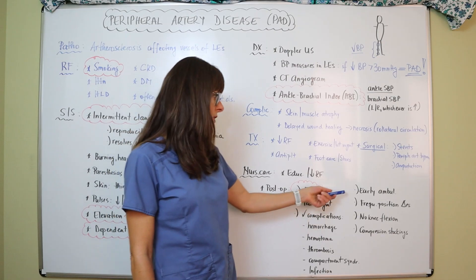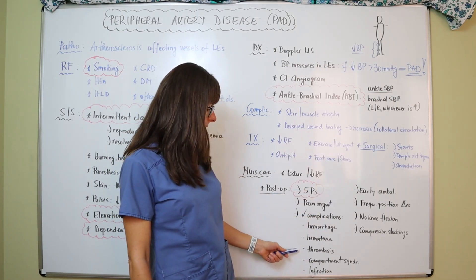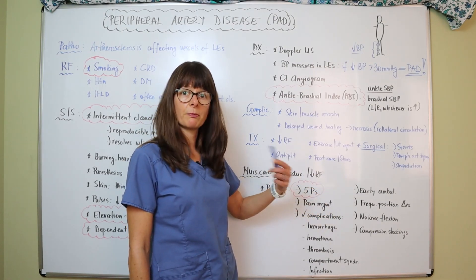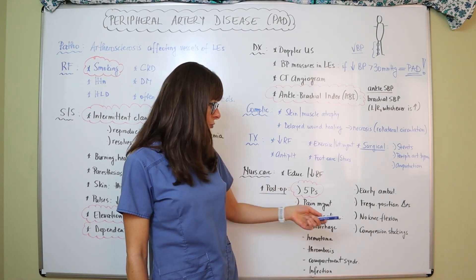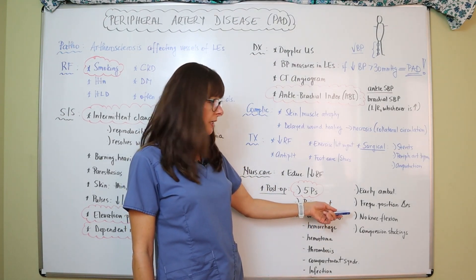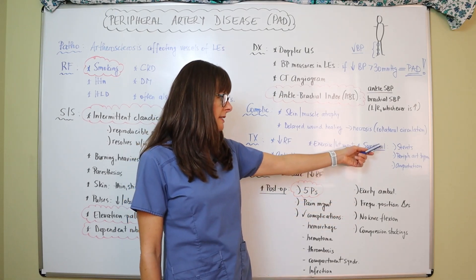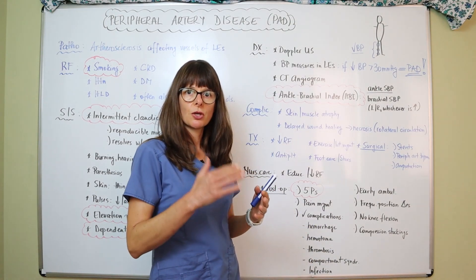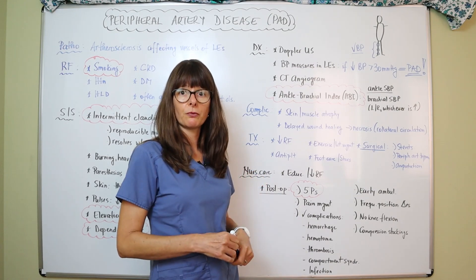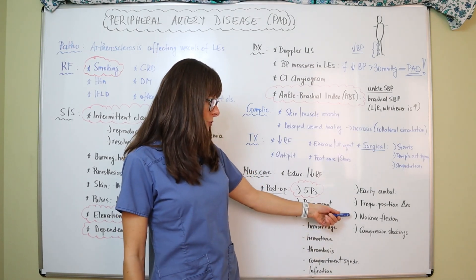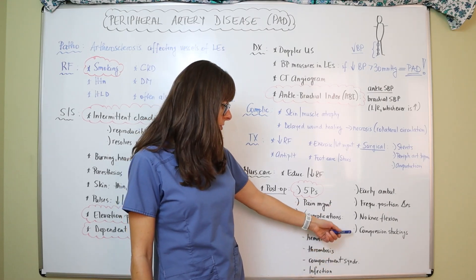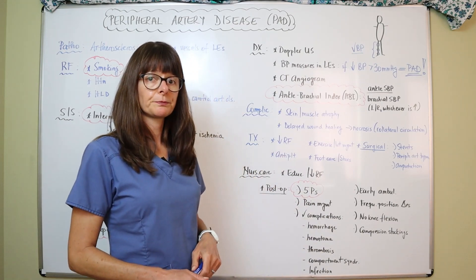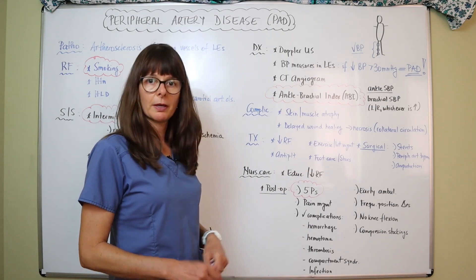We encourage early ambulation to get patients moving and help prevent thrombosis formation, as well as frequent position changes to protect the skin and prevent pulmonary issues. We avoid having the knee flexed to prevent kinking a new stent or peripheral artery bypass at the knee, which could obstruct blood flow — the duration of this precaution depends on the surgeon. Compression stockings are also used to support blood flow and venous return and prevent blood clot formation.